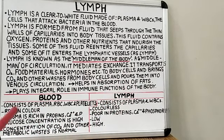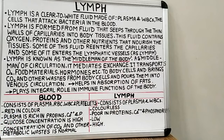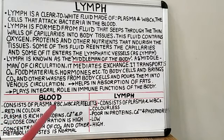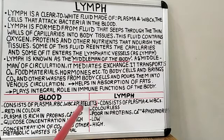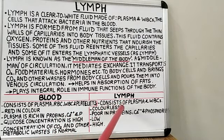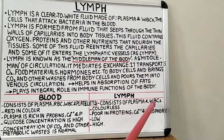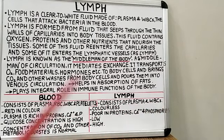Now we will discuss the differences between blood and lymph. Blood consists of plasma, red blood cells, white blood cells and platelets. Whereas lymph consists of plasma and white blood cells, particularly lymphocytes.